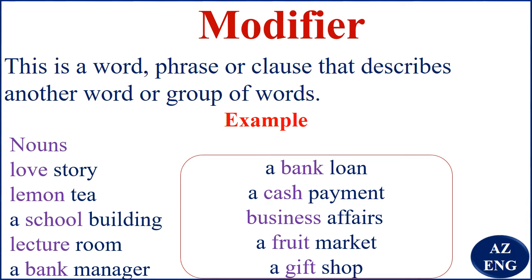These nouns are doing the work of an adjective, so we say they have been used adjectively — from the word 'adjective.' What does an adjective do? It modifies or describes a noun. So here, these nouns describe the nouns story, tea, building, room, manager, loan, payment, affairs, market, and shop. We say the nouns have been used adjectively.